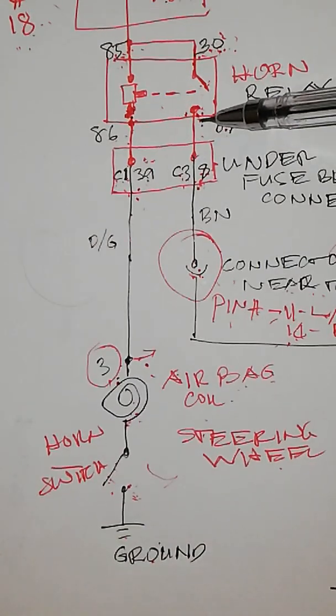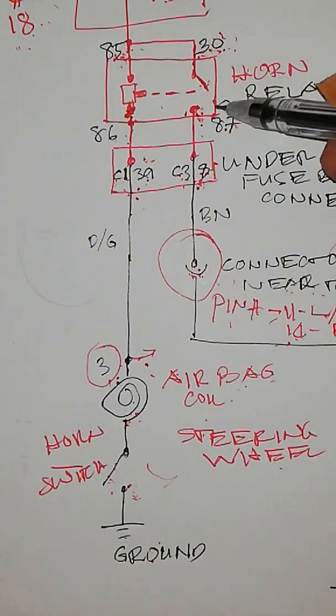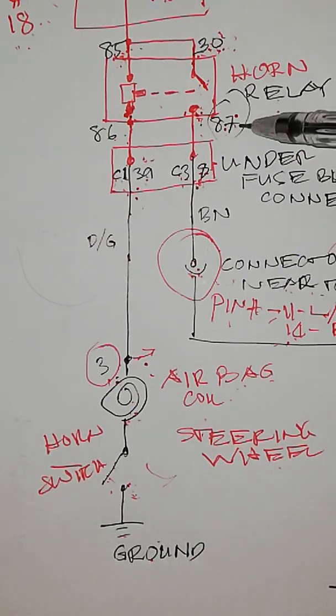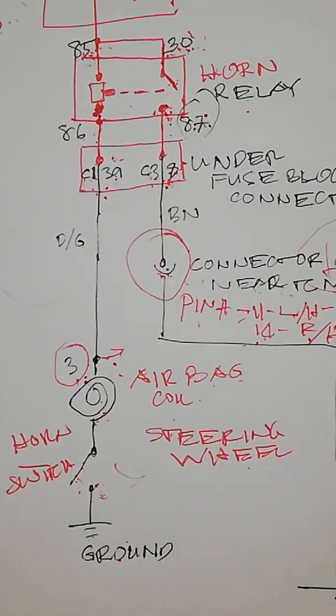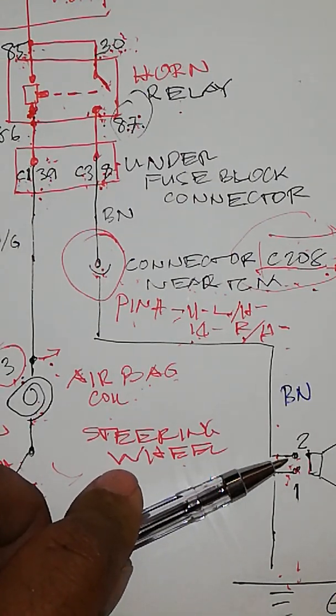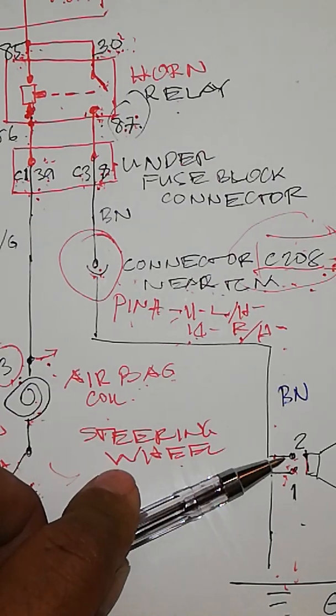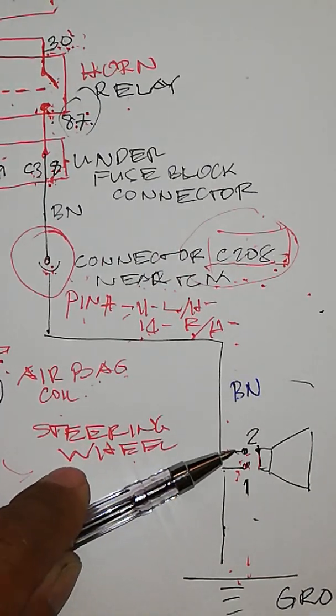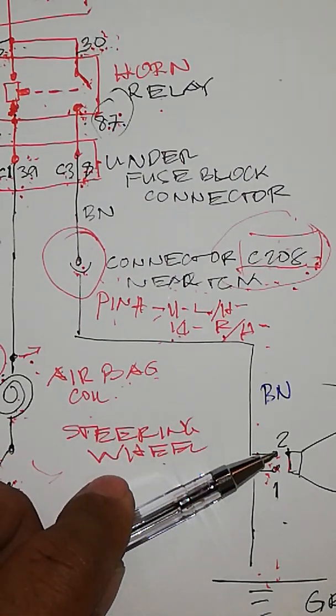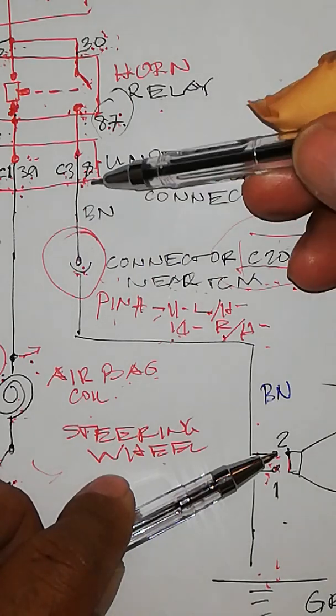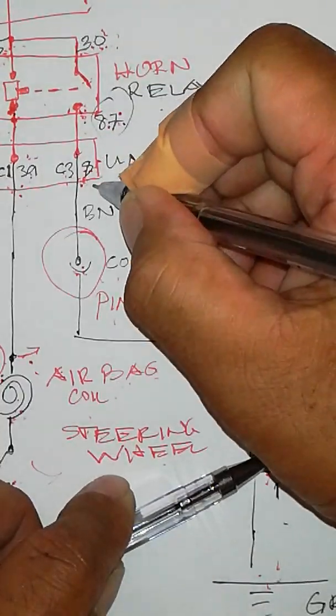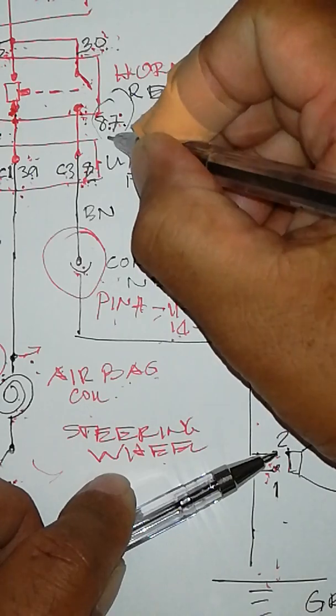Now look at my ballpoint pen. This is 87, and horn, this is your horn component. This is pin number two and 87. This is 87.